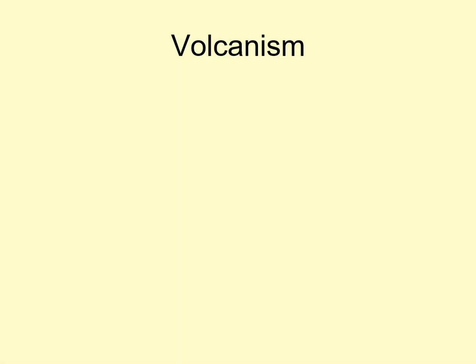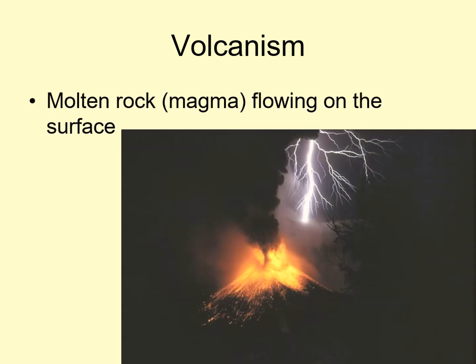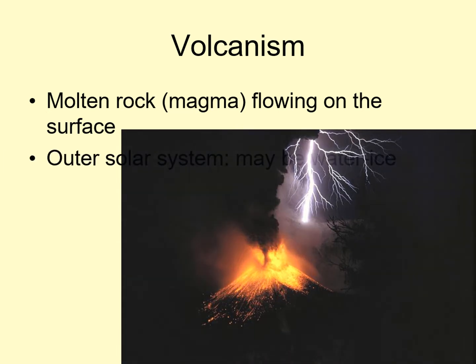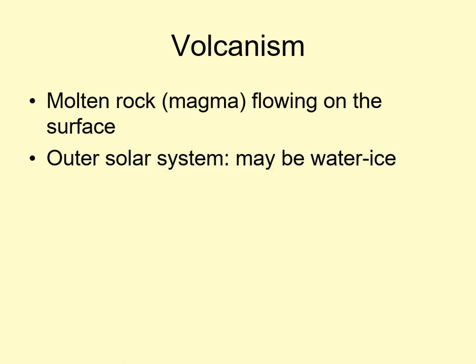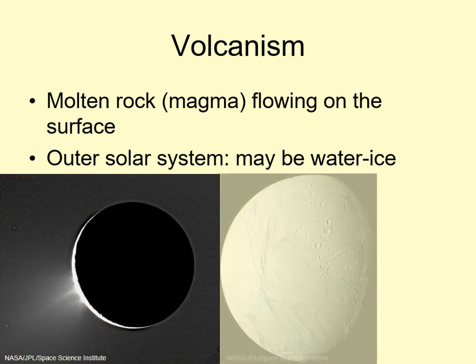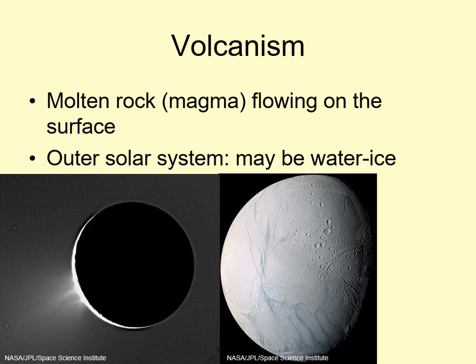The next major surface process is volcanism. Volcanism is the eruption of molten rock or magma onto the surface of a world. Notice that in the outer solar system, most moons have ice as the major surface rock, so the volcanoes there are ice volcanoes instead. Below we're seeing two pictures of Enceladus, a moon of Saturn, with active ice volcanoes. One of the images shows the eruption of water ice crystals out into the space surrounding Enceladus.